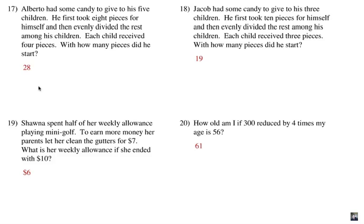Number 17, Alberto had some candy to give to his five children. We'll take note of that first. He took eight pieces for himself and he took, that's a subtraction idea, then evenly divided the rest among his children. Each child received four pieces. With how many pieces did he start? If we focus on the question, that'll help us determine what the variable is. I'm going to say C, four pieces of candy.